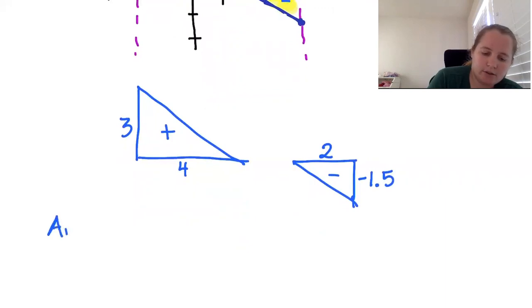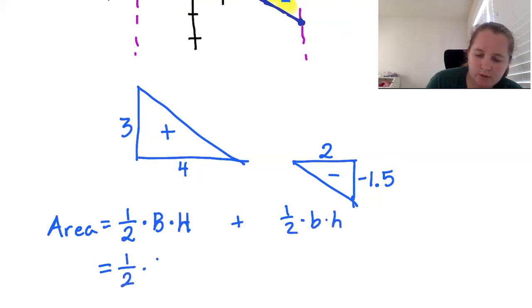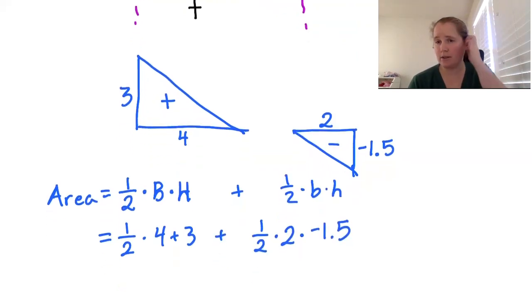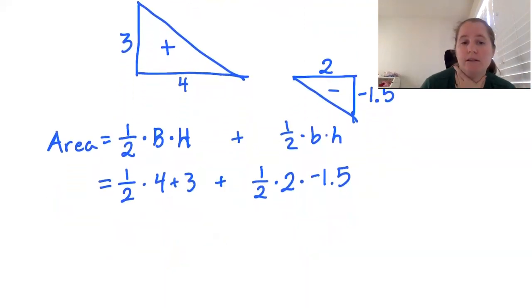So the area of that first triangle, we have 1/2 times base times height. I'm going to do capital for the first and lowercase for the second. So we are looking at 1/2 times 4 times 3, and then we have 1/2 times 2 times negative 1.5. You could view these as positive areas and just subtract because it's below the curve, or we can view them as having negative heights.